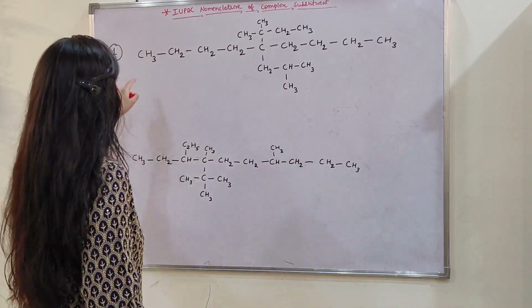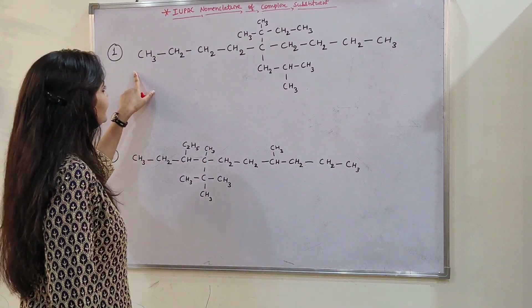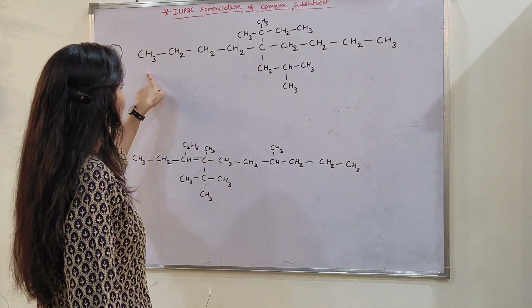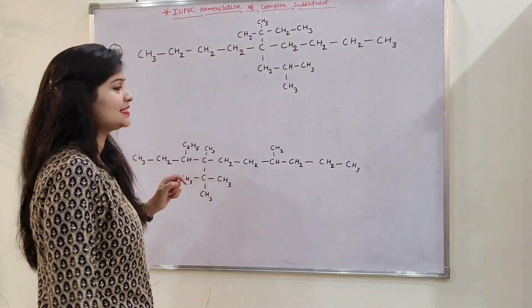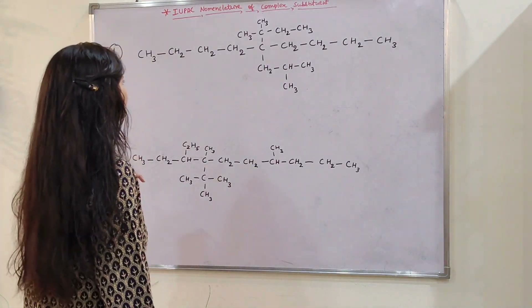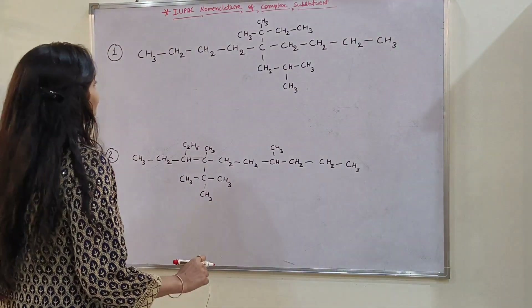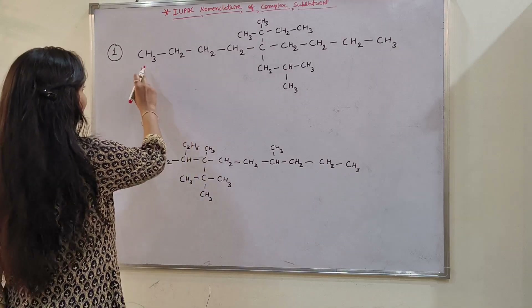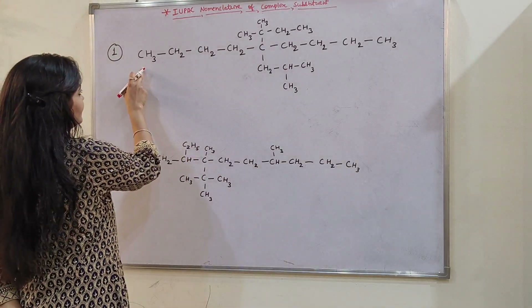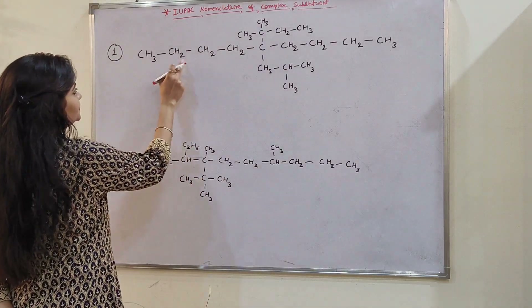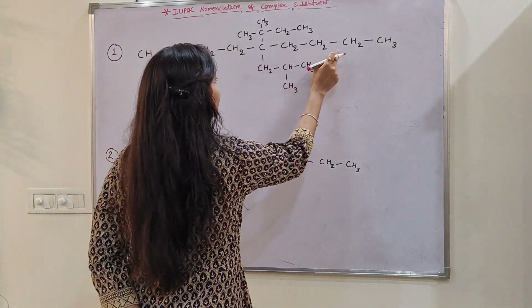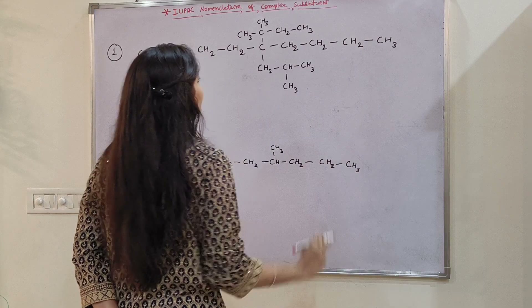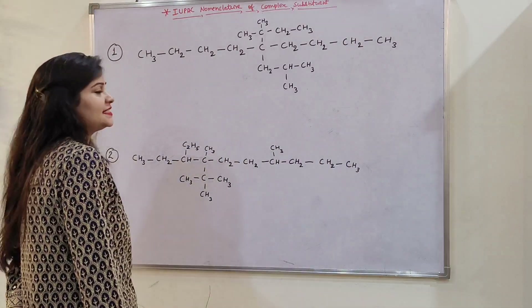First of all, let's see the first example. What do we do in the first step? We have to select the longest chain of carbon. Let's start counting. If we start counting here: 1, 2, 3, 4, 5, 6, 7, 8, 9. We are getting 9 carbons.